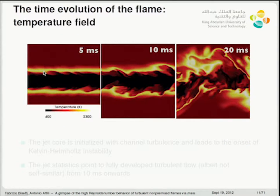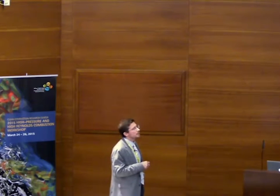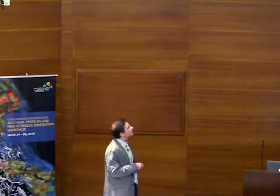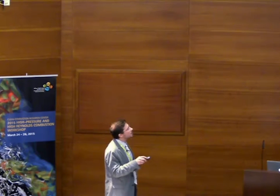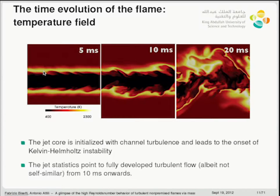The time evolution of the flame: snapshots of the temperature field at 5, 10, and 20 milliseconds. The fuel jet is in the middle surrounded by air, which is preheated at 800 Kelvin. The fuel is nitrogen with N-heptane — a highly diluted stream where nitrogen is 85% and the remainder is N-heptane. By 10 milliseconds, the Kelvin-Helmholtz instability triggered by the strong shear has reached a state we can call fully developed turbulent flow, though this corresponds to the near field of a slot turbulent flame — turbulence has developed but it is not self-similar.